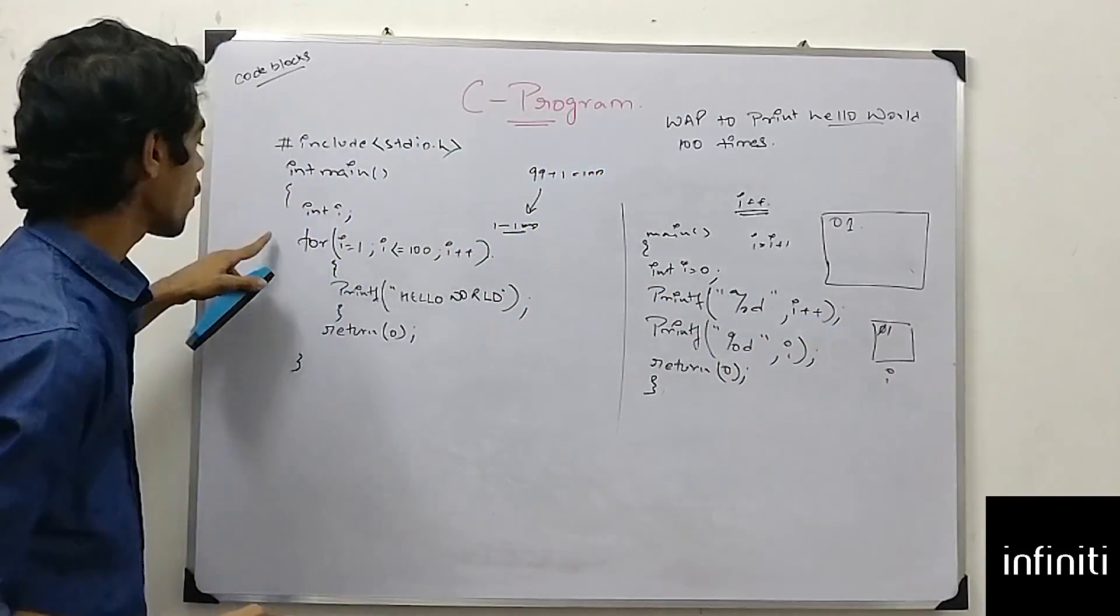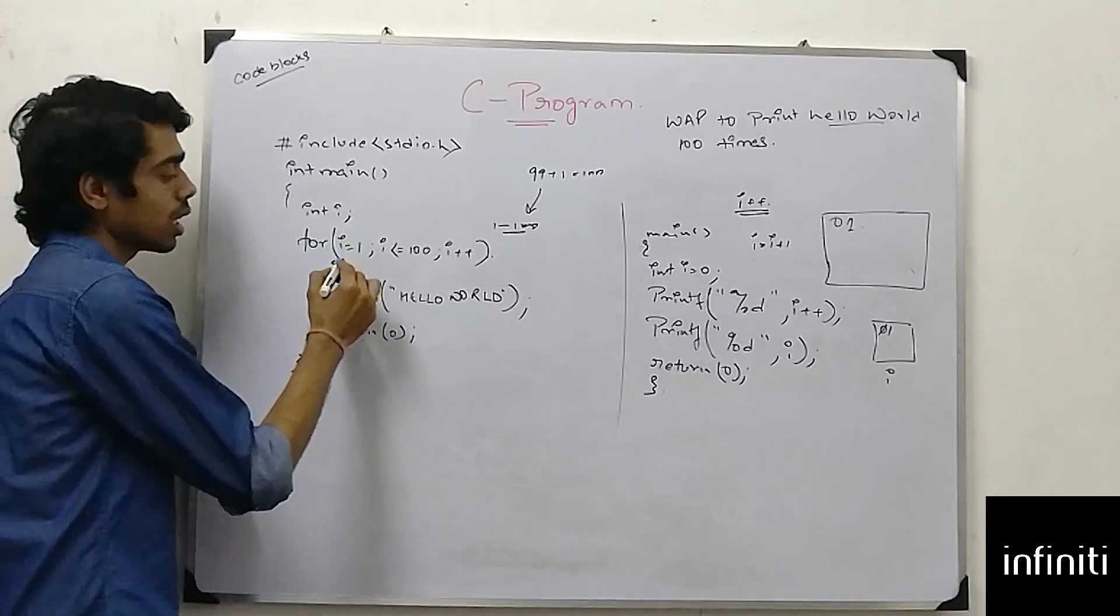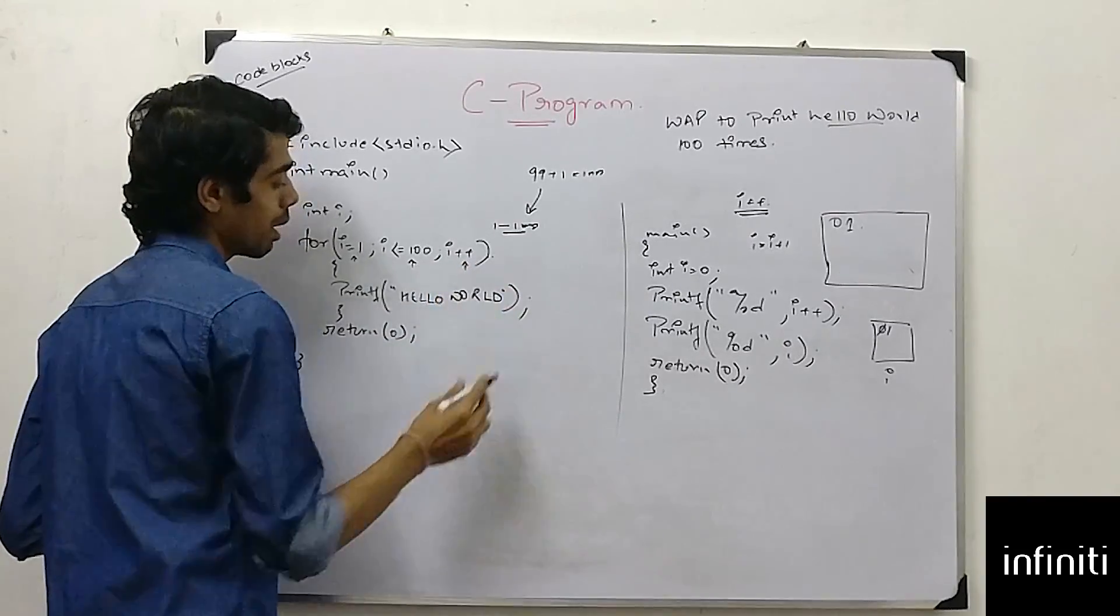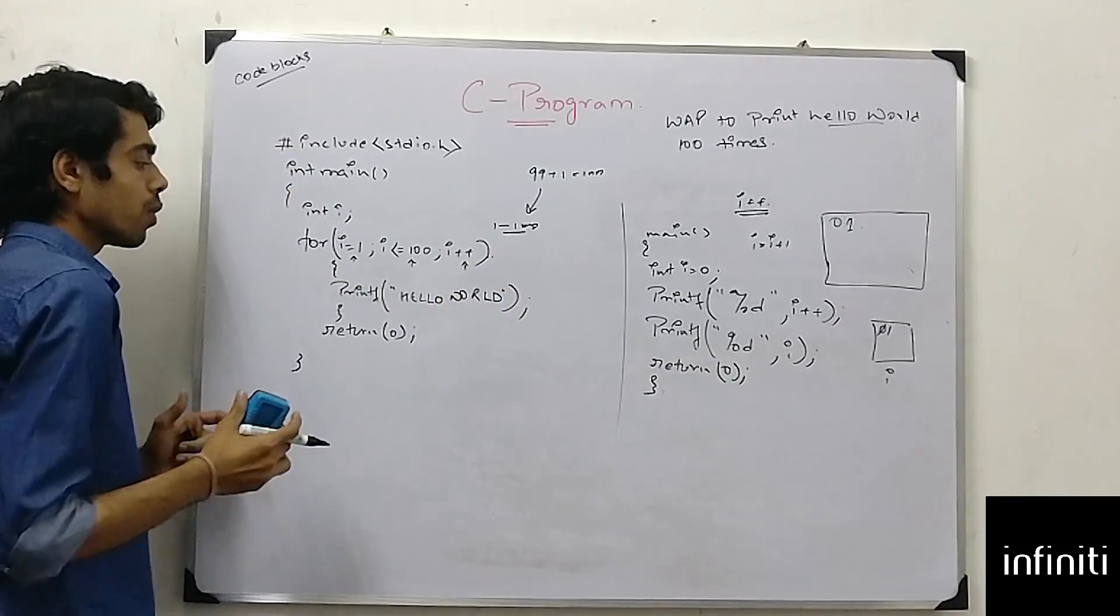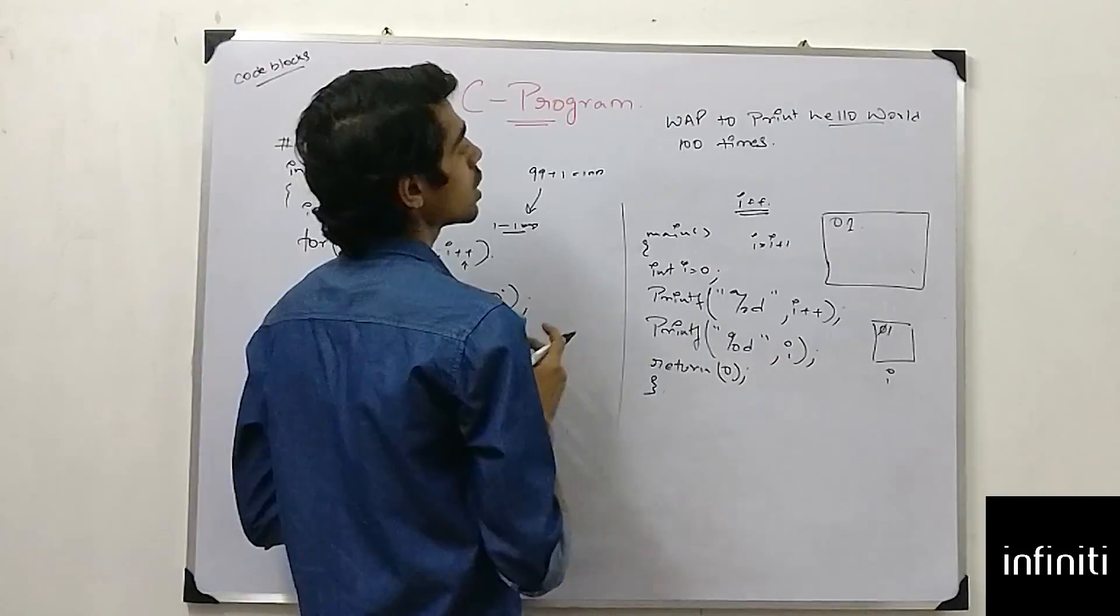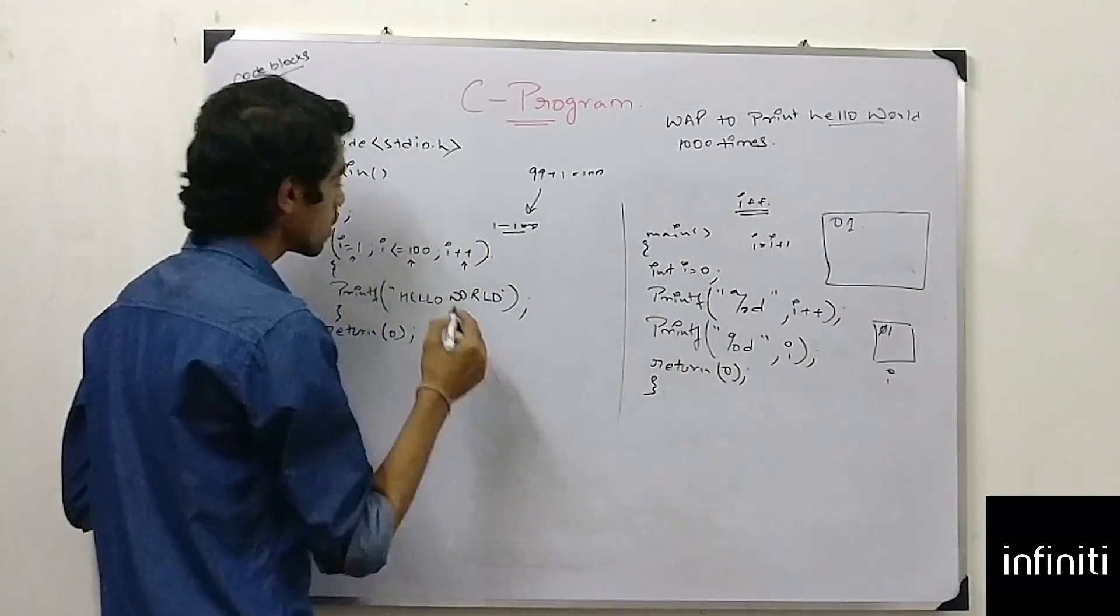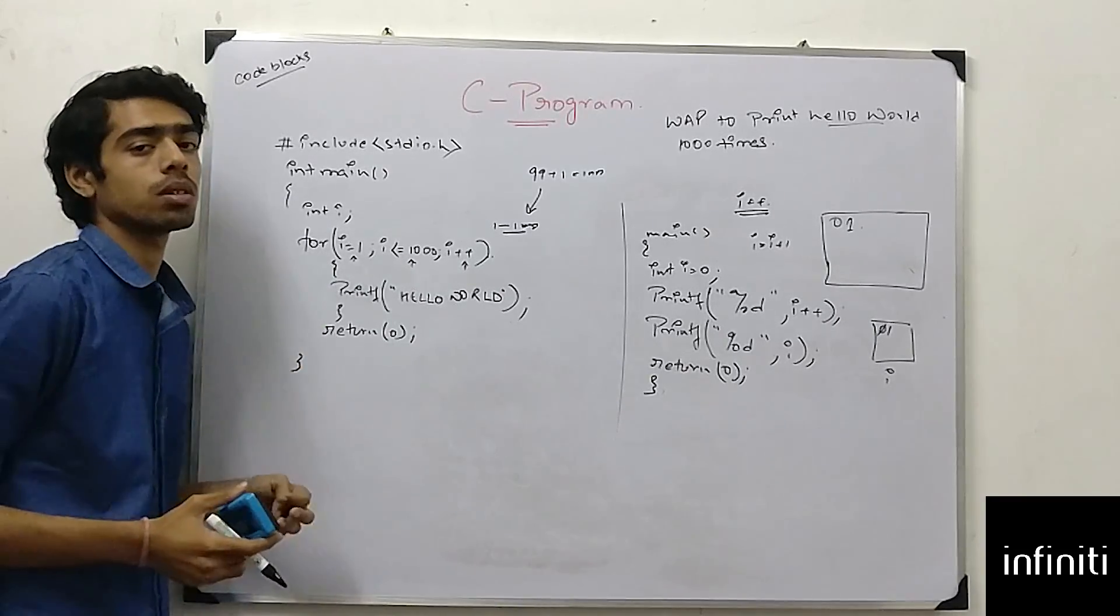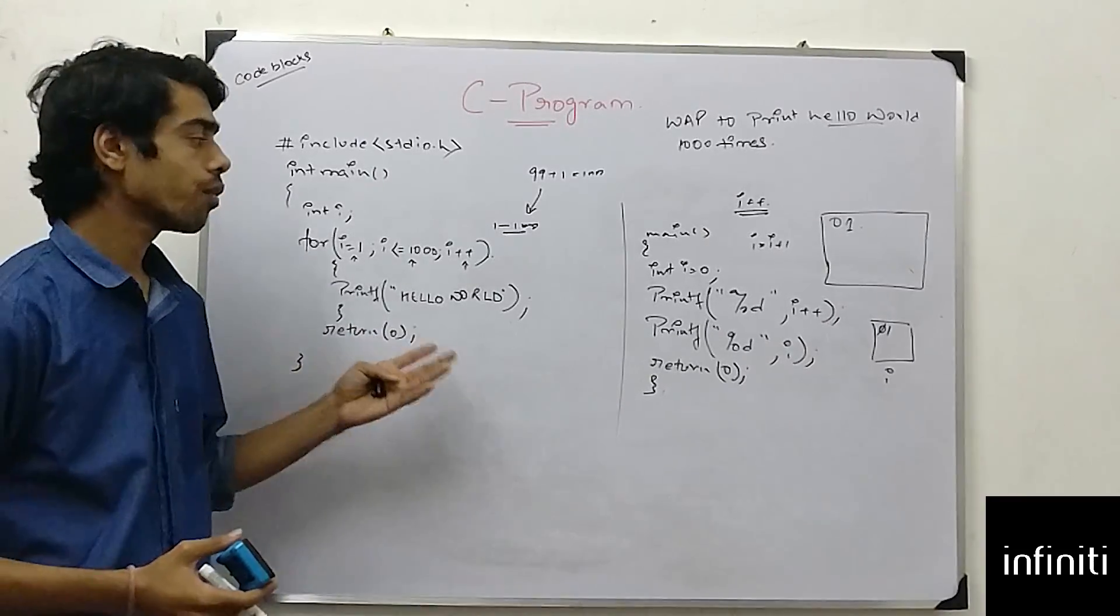So, this is the for loop. How to write a for loop. This is the condition: Initialization, Condition, Increment. And, if I want to do this thing for a thousand times, I just have to increase a zero value. That's it. I don't have to write this thing for a thousand times. This is the way to write a for loop.